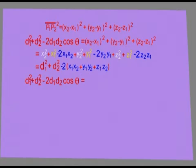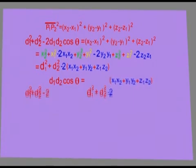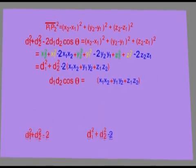Both sides have d1 squared plus d2 squared and minus 2. Therefore they cancel out.